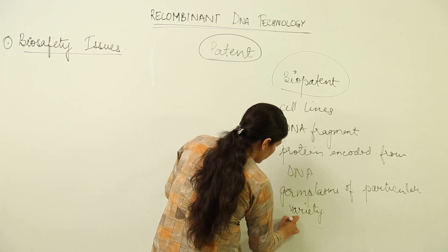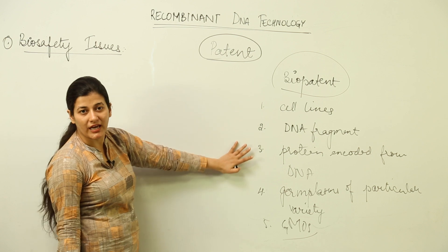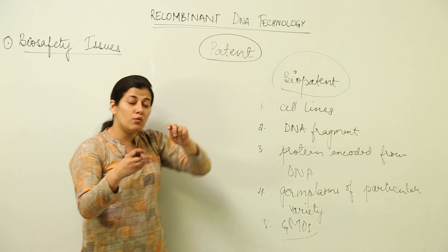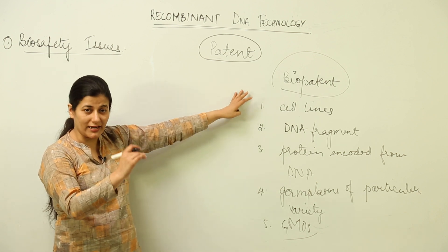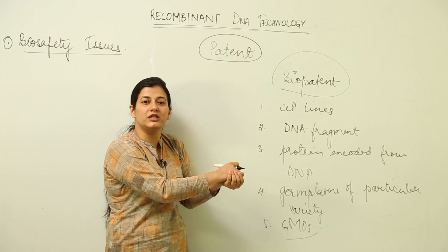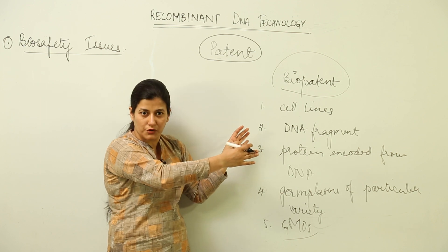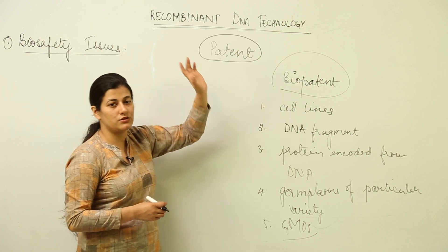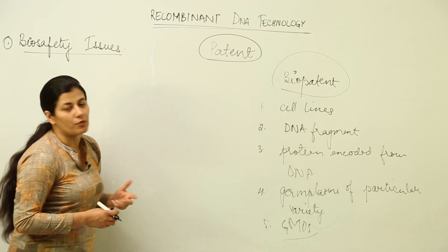Genetically modified organisms are also fields where biopatent can be applied. If you have discovered some sort of cell line, you can go for a patent. Afterwards, whatever discoveries are to be made in that particular cell line, you will control. That particular country or commercial firm holds the patent for that biological product, so whatever discovery is to be made requires permission from them first.